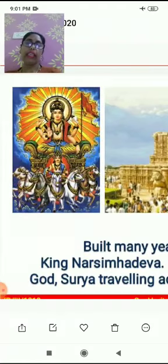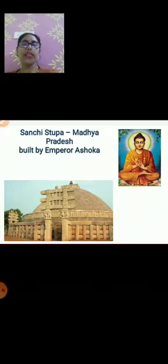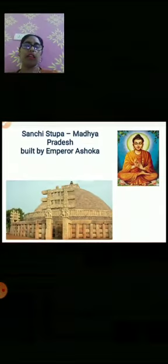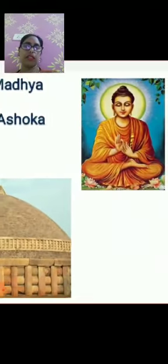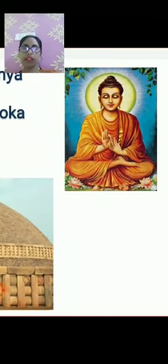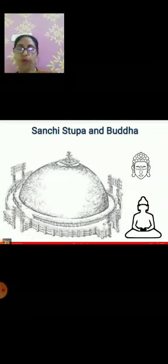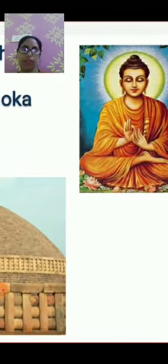Now, dear students, let us move to our next material heritage — Sanchi Stupa. You can see Sanchi Stupa here. Sanchi Stupa is there in Madhya Pradesh and was built by Emperor Ashoka. It has four richly carved decorative gateways that depict scenes from the life of Gautam Buddha.